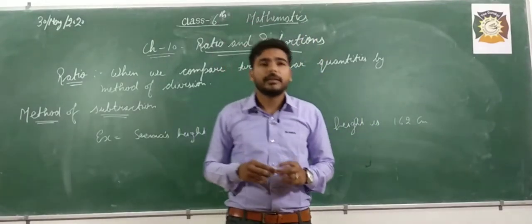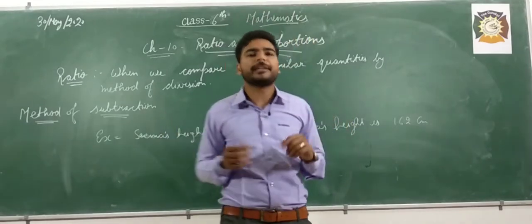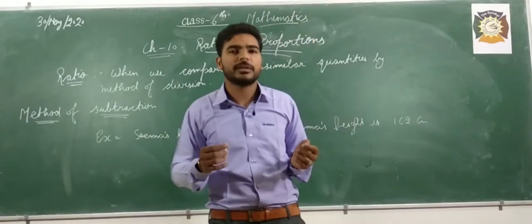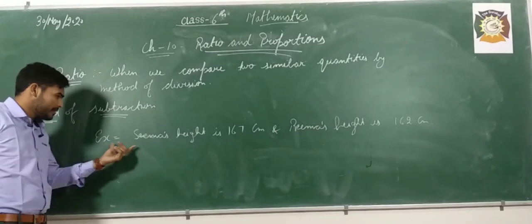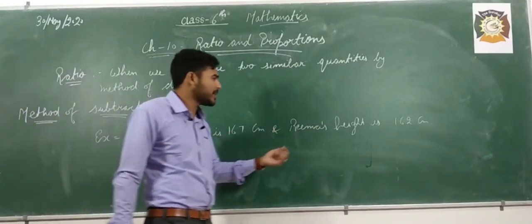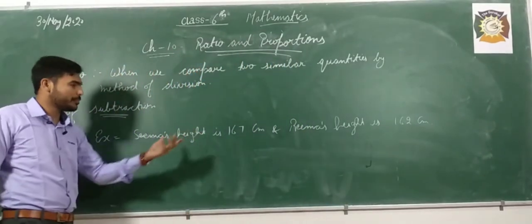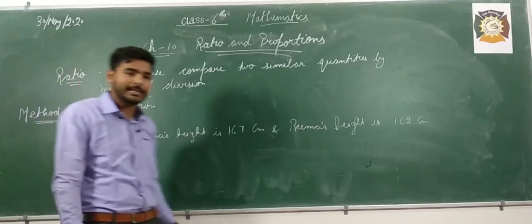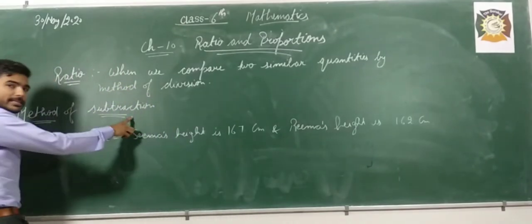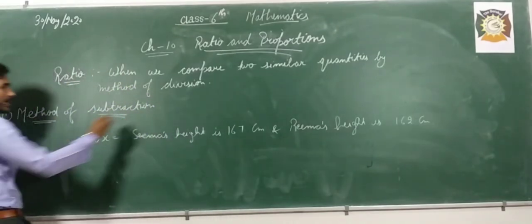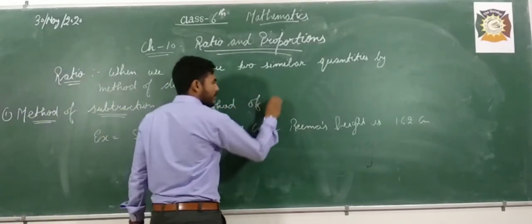You all know that in day to day life, we compare different types of quantities or we compare similar items. So how can we compare? We have two methods: one is the method of subtraction and the second one is the method of division.